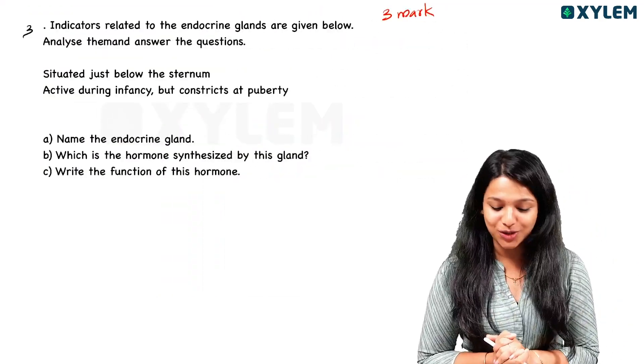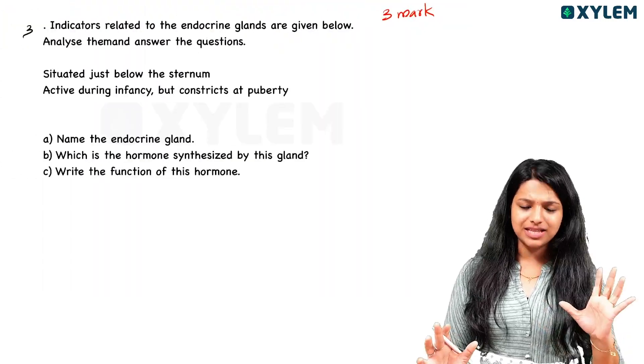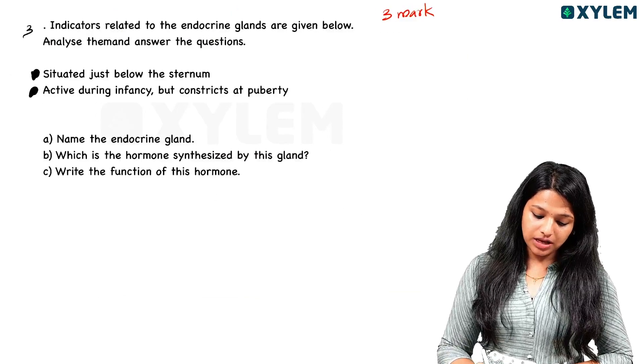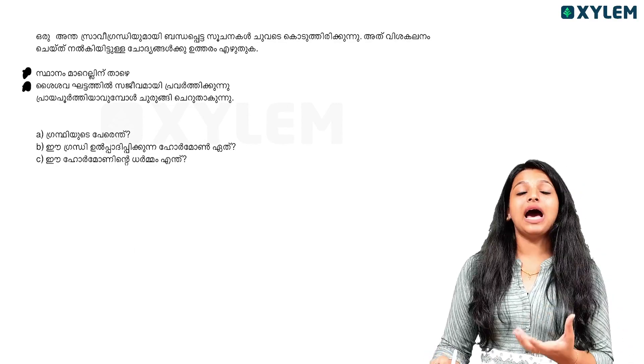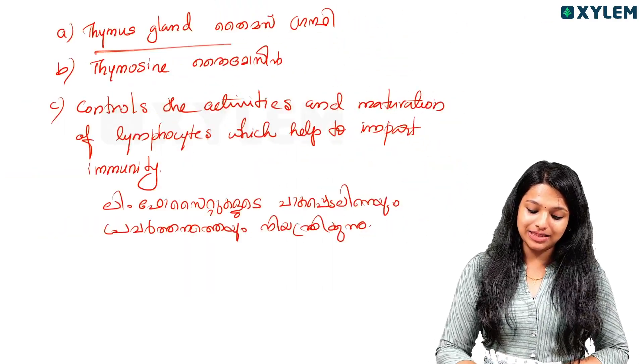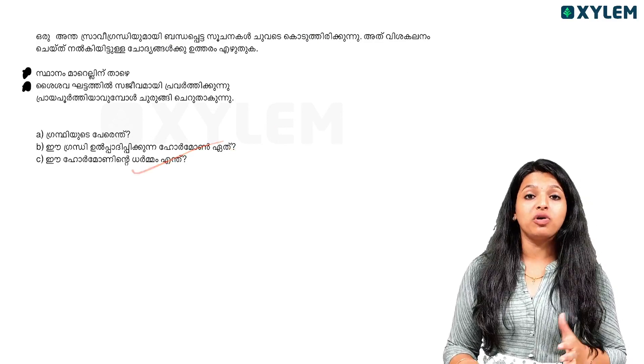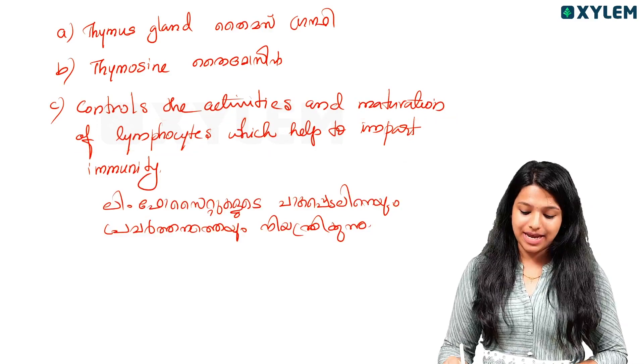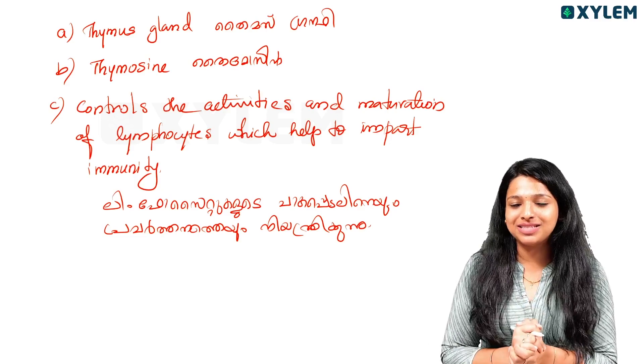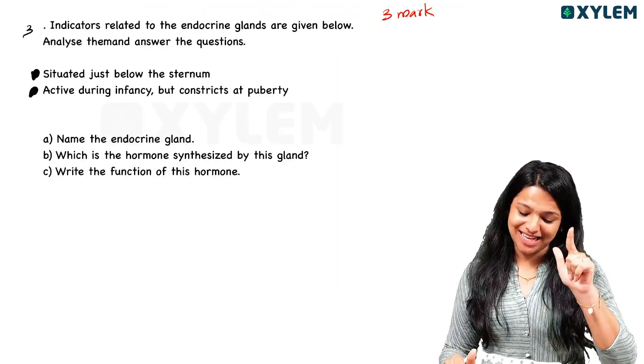I will ask you about three marks. Indicators related to endocrine glands are given below. Location below the sternum. Active during the infancy, but constricts at puberty. In the middle of the sternum. This is the thymus gland. Let's talk about it. Complete the following table related with the hormonal functions.